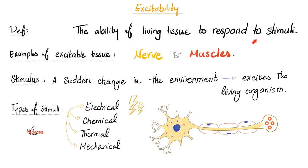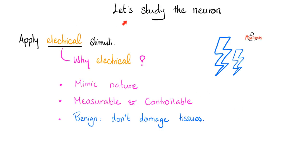Excitability is the ability of living tissue to respond to stimuli. Examples of excitable tissue: nerves and muscles. Stimulus is a sudden change in the environment leading to excitation of the living organism. Here we're talking about electrical stimulation. Why use electrical stimulus? Because it mimics nature—the natural stimuli in your body which are ionic in character causing electrical stimulation. Second, electricity is measurable and controllable. Third, electricity is benign. It won't damage the nerve, and you can repeat the test as many times as you want.